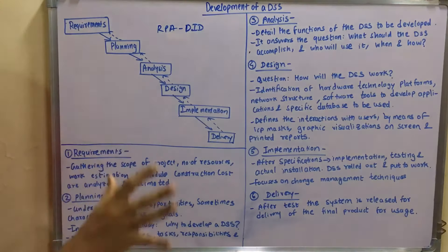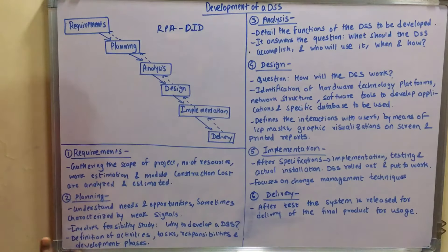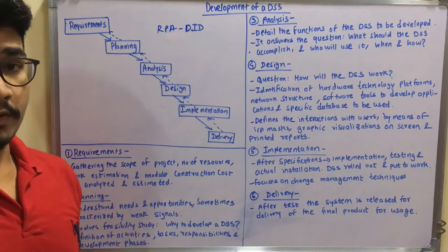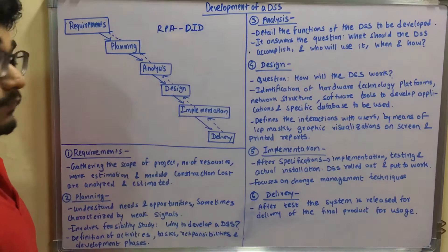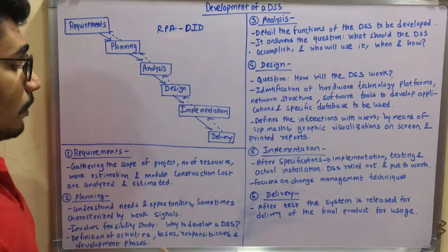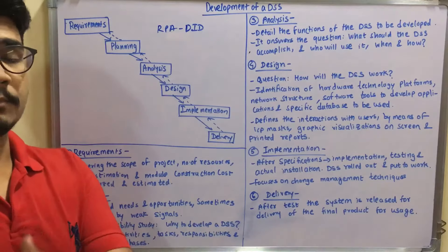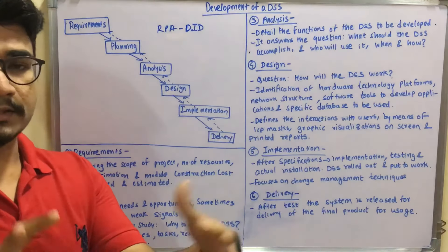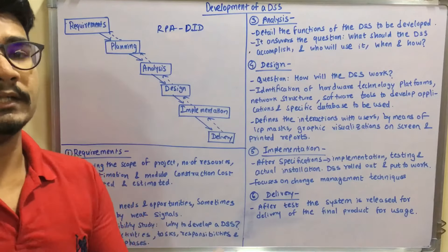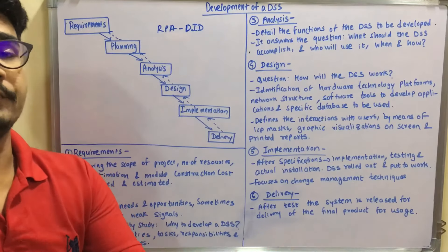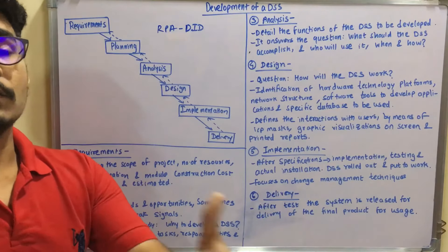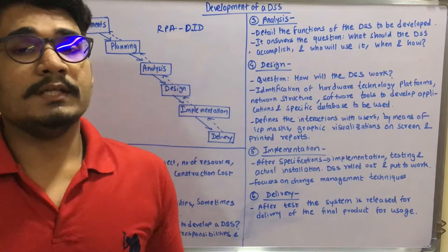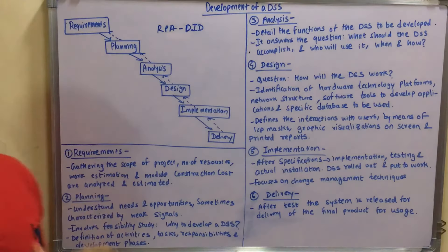First you have the Requirement phase, where you gather all the scope of the project, the number of resources required for the project, the work estimation, as well as the model construction cost of each of the modules. Different departments are analyzed and estimated — the number of weeks or days and the plans are laid out for completing each particular activity or task.